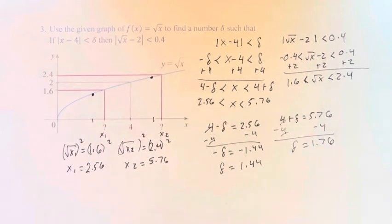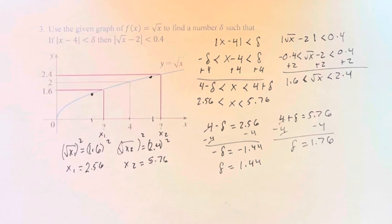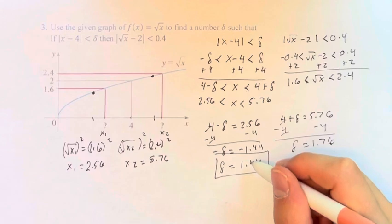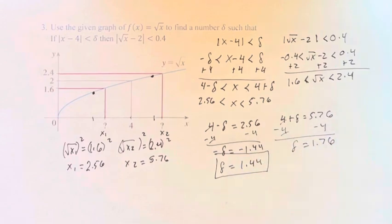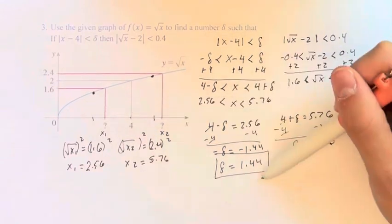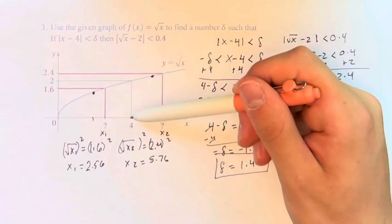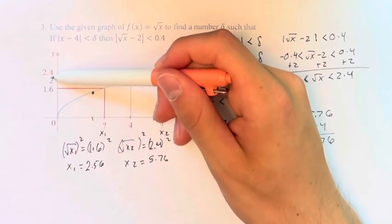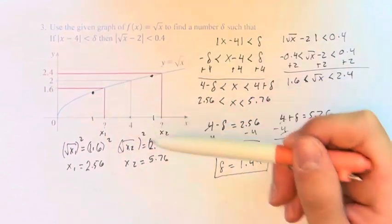So we can say that delta is 1.44. And if you go no more than 1.44 away from 4 on the x-axis, the square root of x is going to be between 1.6 and 2.4 for all values within that range.